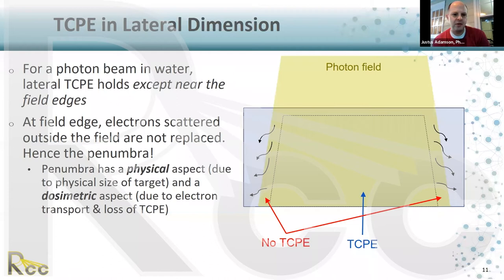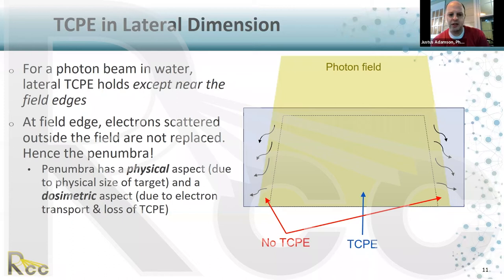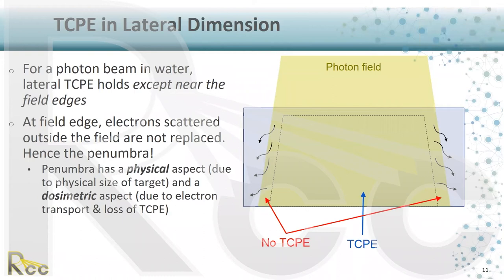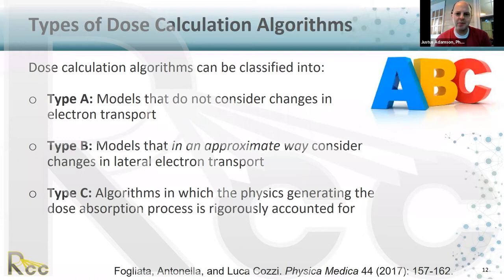In the lateral dimension, lateral charged particle equilibrium holds except near field edges, where electrons scattered outside the field are not replaced by equal electrons scattering back in — producing the dosimetric penumbra. The penumbra has both a physical component from the finite target size and a dosimetric component due to electron transport and loss of transient CPE. As the field gets smaller and smaller, these non-equilibrium edge regions meet, leaving no area with charged particle equilibrium in the center, creating complex dosimetric situations requiring more sophisticated calculations.